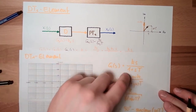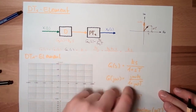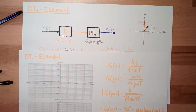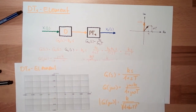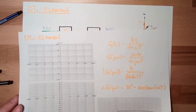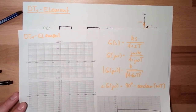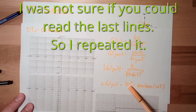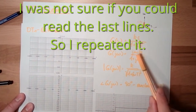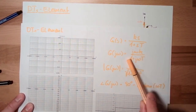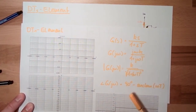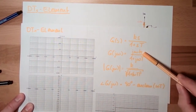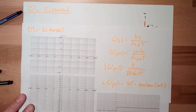And the argument of G(jω) is 90 degrees minus arctan(ωT). This is 90 degrees from the numerator minus the angle from the denominator, giving the total angle.